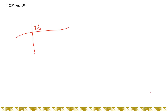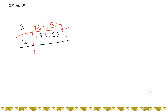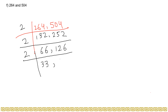Coming to Part F, which is 264 and 504. This number can be divided by 2, so we start from 2. Dividing 264 and 504 repeatedly by 2: we get 132 and 252, then 66 and 126, then 33 and 63. Continuing to divide by 2 where possible gives us the even factors.